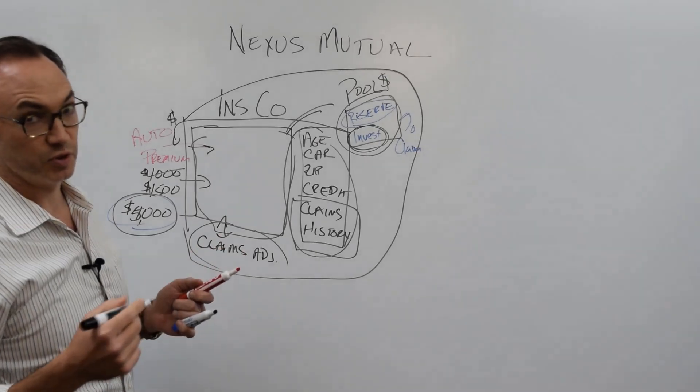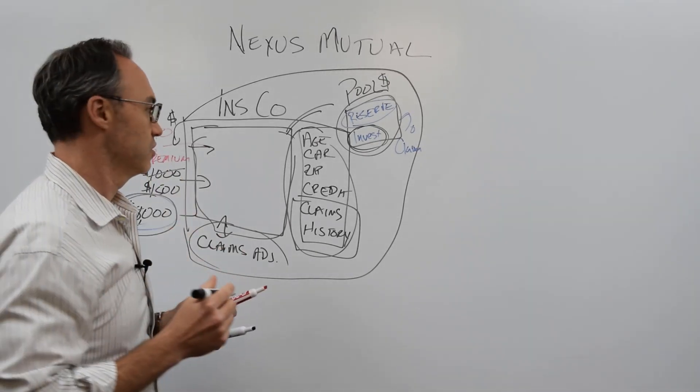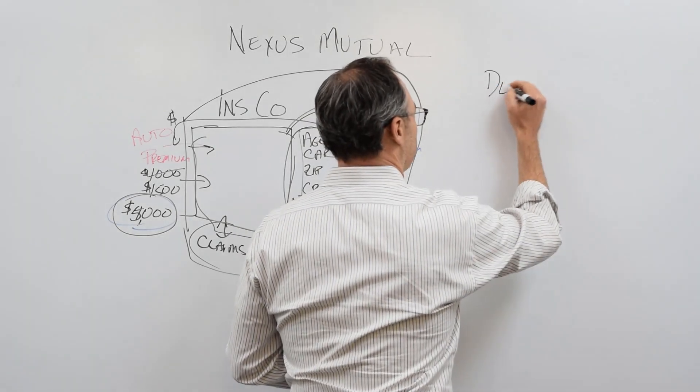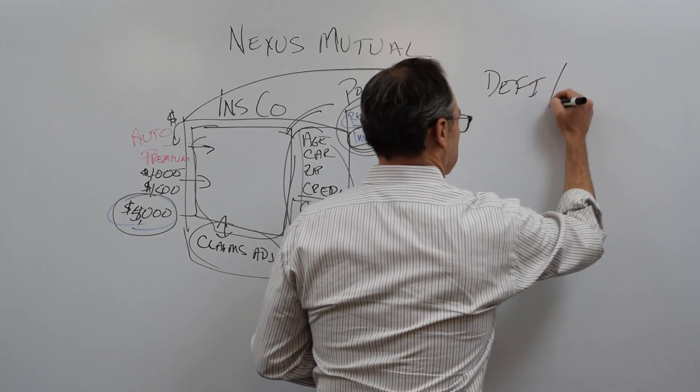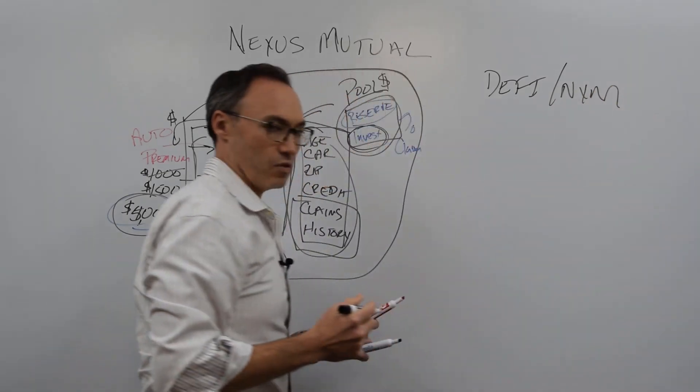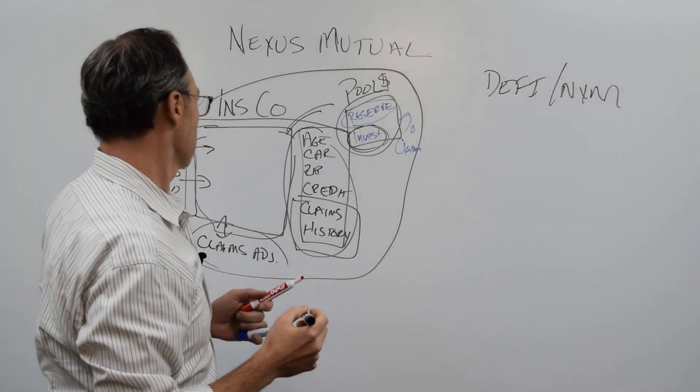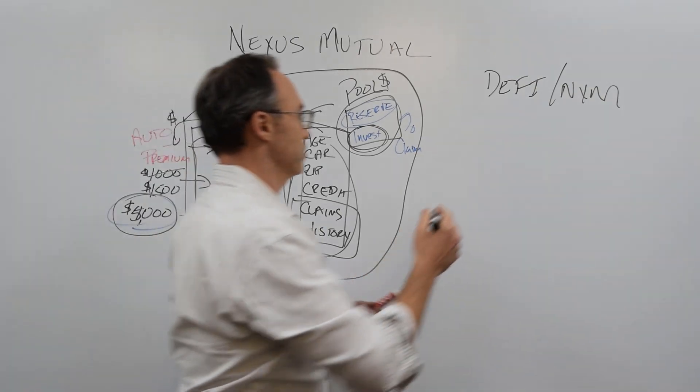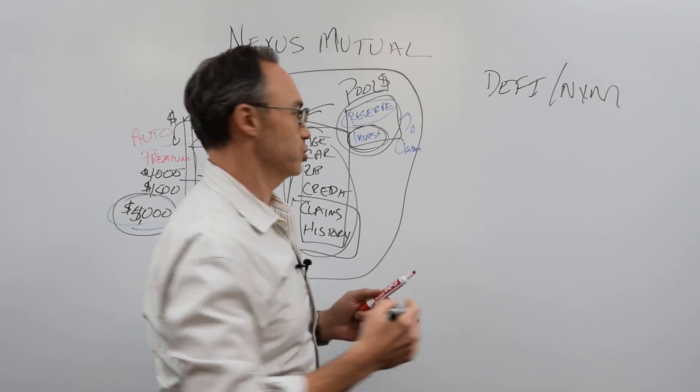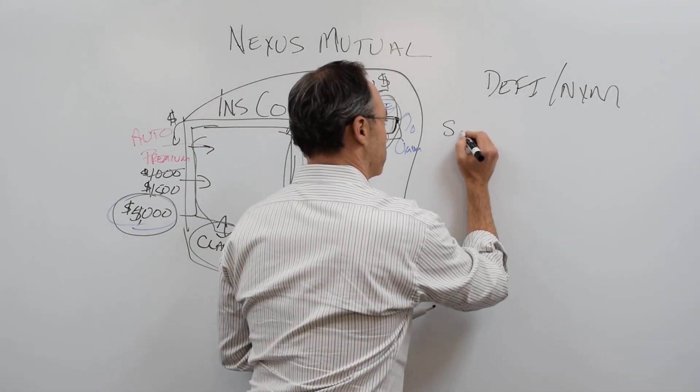All right, so here's what Nexus Mutual is attempting to solve. For the time being, we're going to go over here to the DeFi slash Nexus Mutual. That's the way that we're doing this. And what Nexus Mutual is doing is saying, look, currently, the only thing they're insuring right now that I'm aware of is smart contracts.